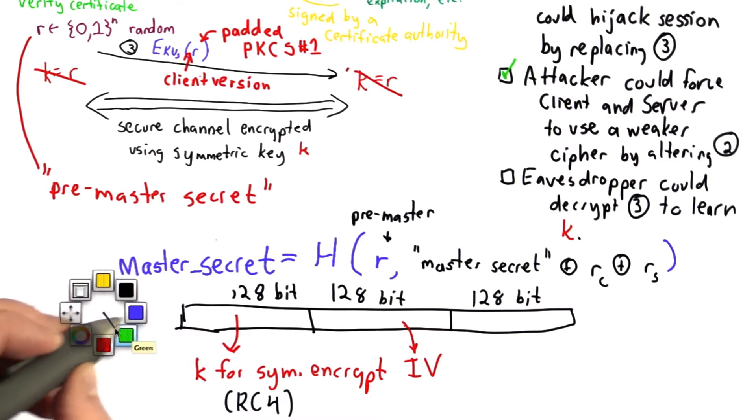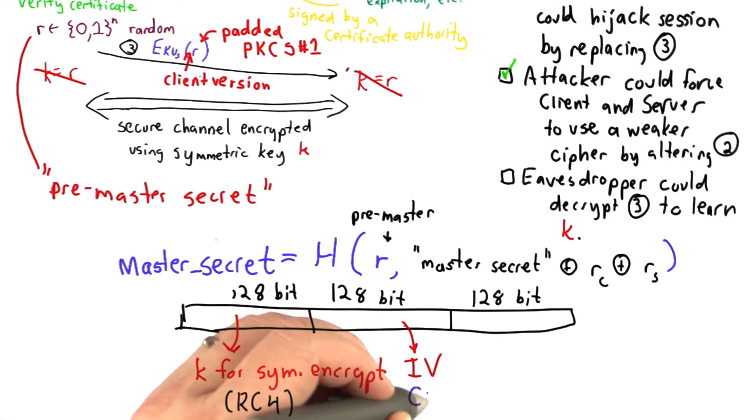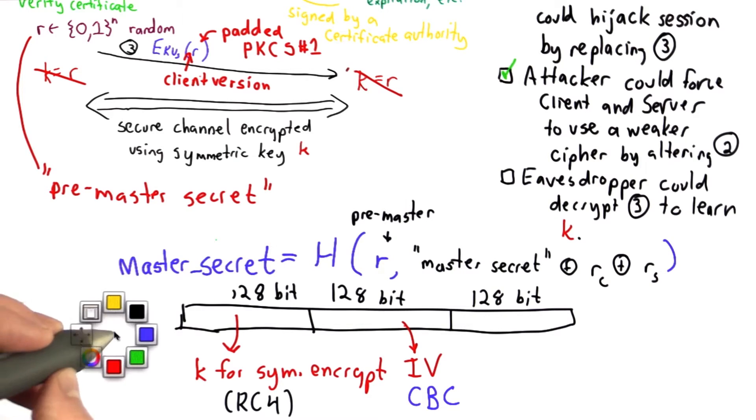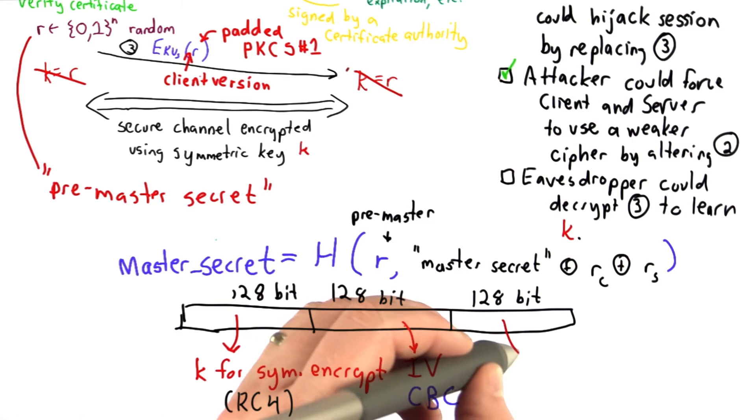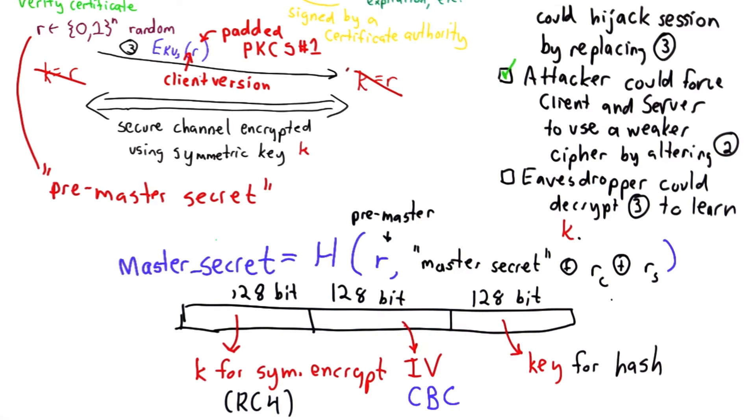One of these will become the IV, and that's the initialization vector that we need for CBC, cipher block chaining mode, that we'll use. We'll talk about the protocol, how it uses that later.